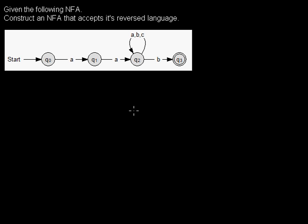I'd like to show you how to construct a non-deterministic finite-state automaton that accepts the reversed language of this one. That means if you think that this automaton reads the words from the beginning, so the first letter first and the last letter last.